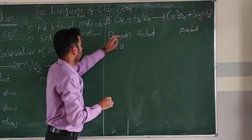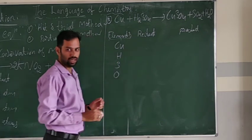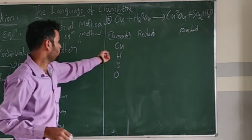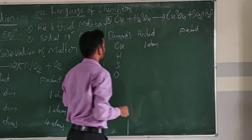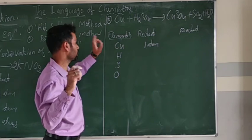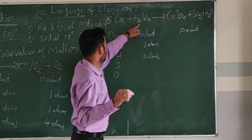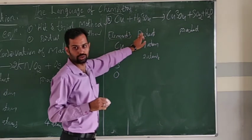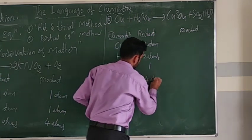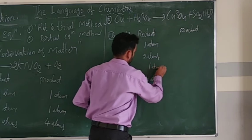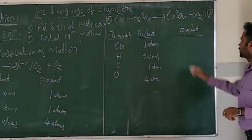In the reactant side: Cu=1, H=2, S=1, O=4. In the product side: Cu=1, H=2, S=2, O=7. The reaction is not balanced. First balance sulfur — reactant side has 1, product side has 2. Multiply 2 to the reactant H2SO4 side.